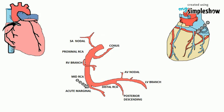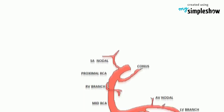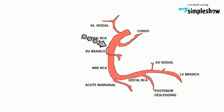The RCA gives off many branches including the posterior interventricular artery, the right marginal artery, the conus artery, and the sinoatrial nodal artery. Segments of the right coronary artery: the proximal segment starts at the RCA origin and spans half the distance to the acute margin; the middle segment runs from the proximal segment to the acute margin; the distal segment runs from the middle segment to the origination point of the posterior interventricular artery, where the posterior interventricular sulcus meets the atrioventricular groove on the base of the heart.